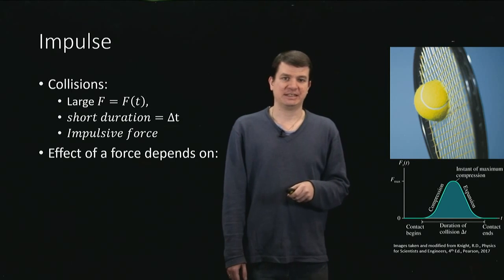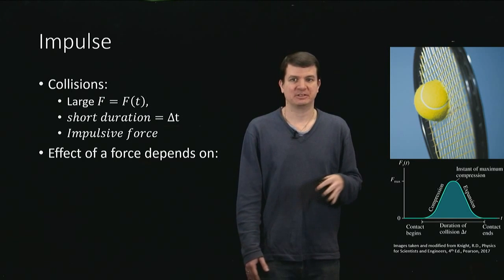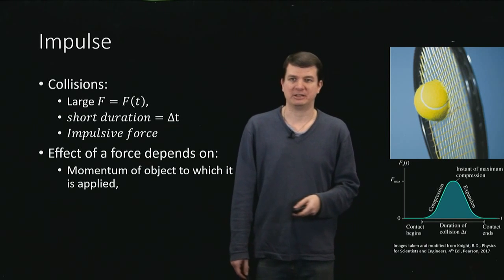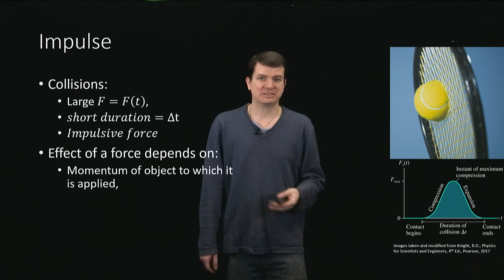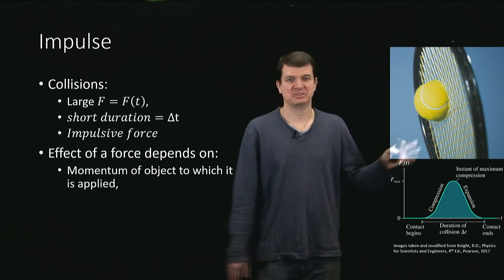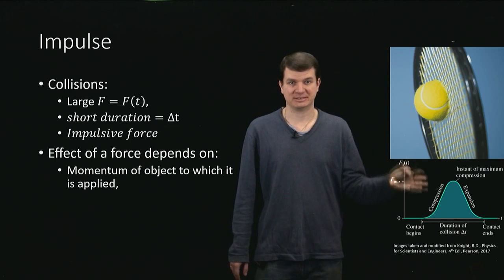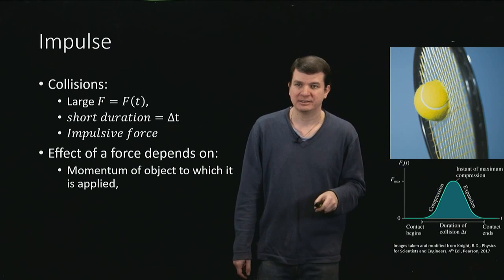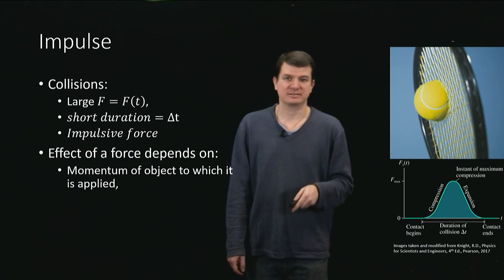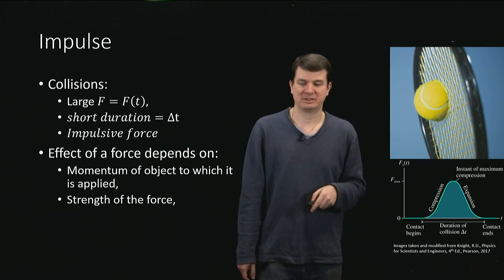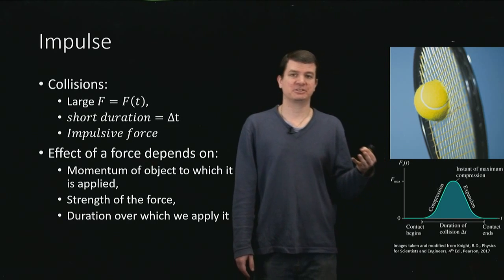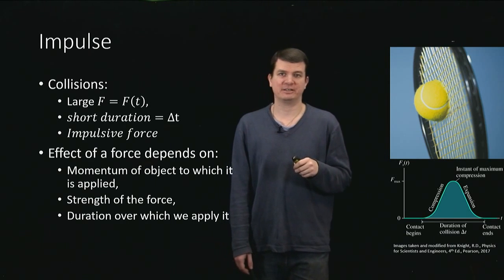We've already seen that the effect of a force, in terms of changing motion, depends on something like the momentum of the object to which it's applied. But of course, the effect of the force by itself, without thinking about conditions that we don't control, such as the initial velocity of the tennis ball coming to our racket, can be altered by controlling two things. We can alter the effect by controlling the strength of the force, or by controlling the duration over which we apply the force.